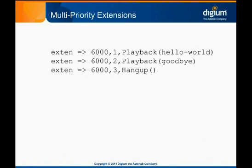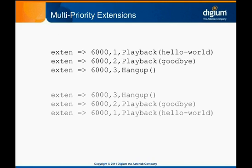It's typical for a single named extension to have more than one action associated with it. Remember that Asterisk's dial plan applications are executed sequentially, one at a time, until the call is hung up. We can chain together multiple actions on a call by repeating the previous line and changing just the priority and application fields. Applications are executed in priority order, so even if these lines were listed in reverse order in extensions.conf, as long as the priorities don't change, the hello world file will be played first, the goodbye file would be played second, and then the call would be hung up. There's no rule that says all the priorities for a given extension must be listed near each other in the dial plan, but it's convention to do so to maximize readability.